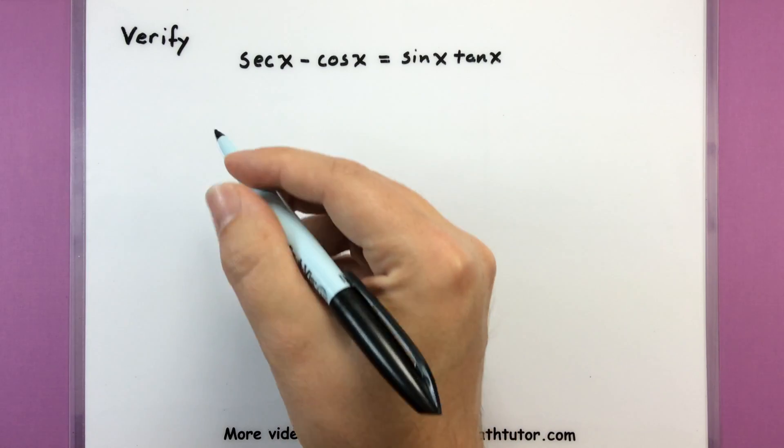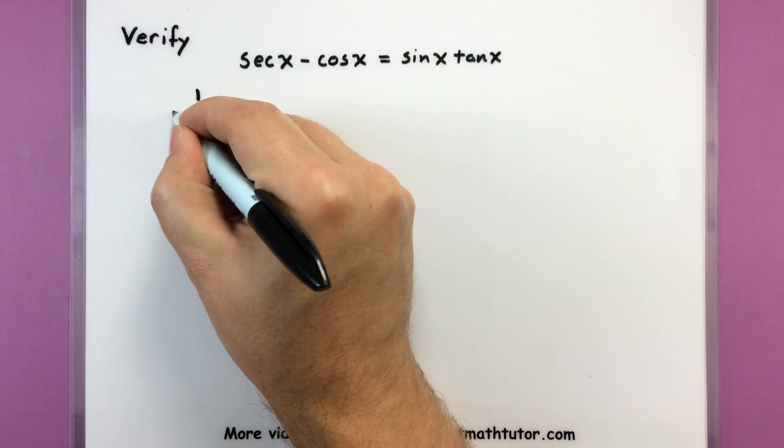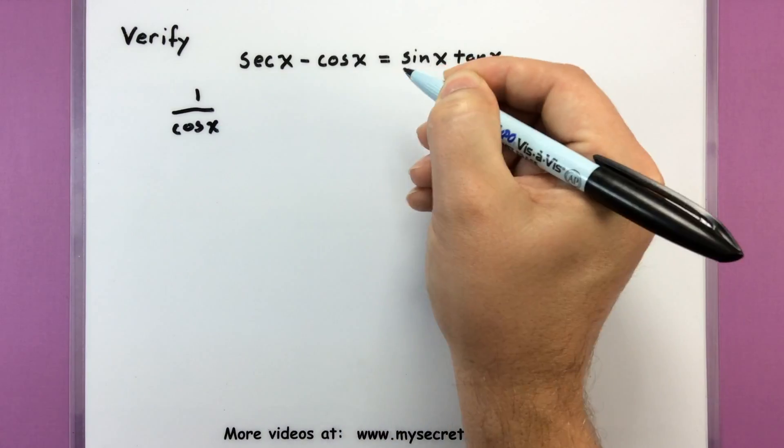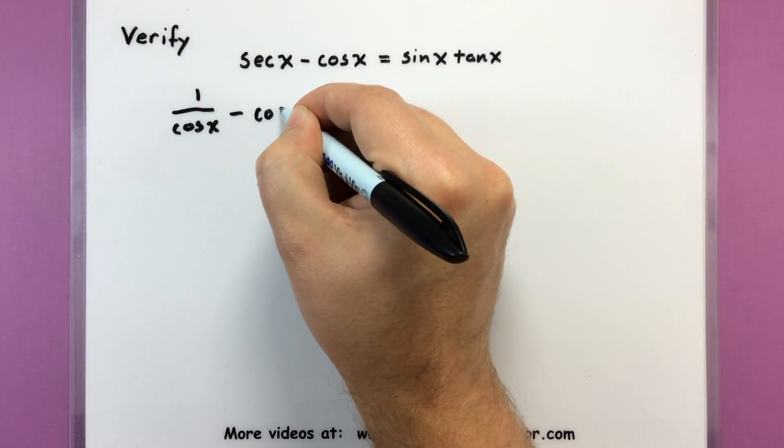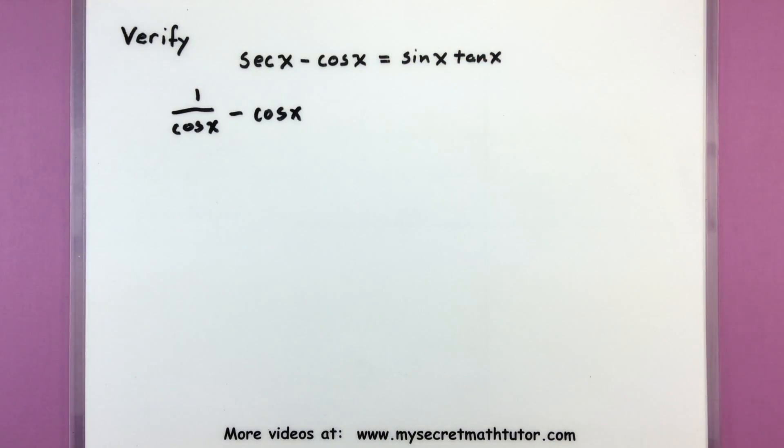So I know that secant over here is the same as one divided by cosine. And of course I just have cosine. Now again that doesn't look anything like the right but I'm manipulating this hopefully trying to get it to look like the right somewhere along the line.